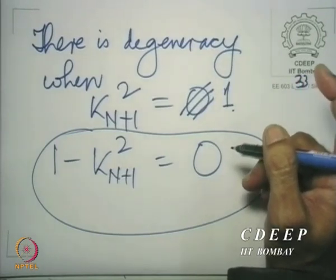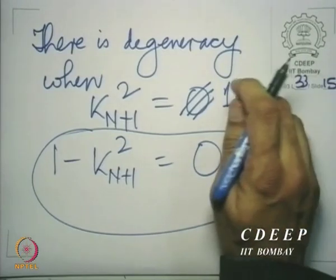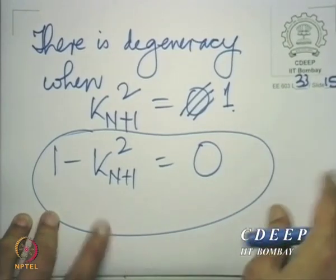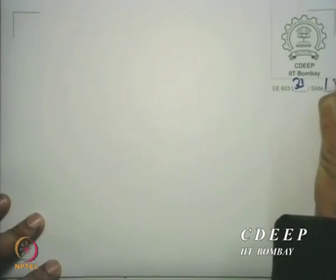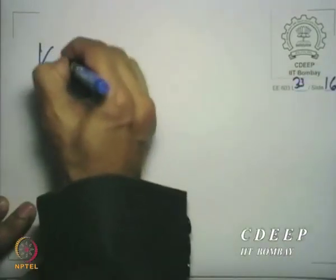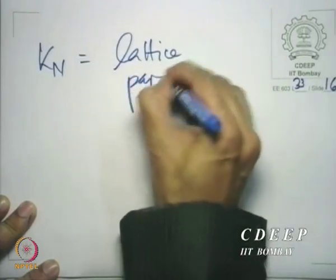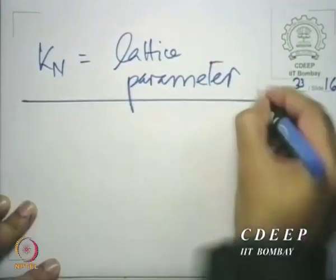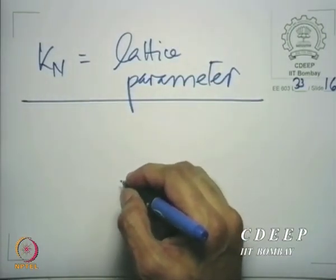We are assuming that the coefficients are all real, so k's are real. It could be either plus or minus 1. k_n is called the lattice parameter. Degeneracy results when the lattice parameter takes the value plus or minus 1, and degeneracy means that the system function cannot be realized with the lattice.